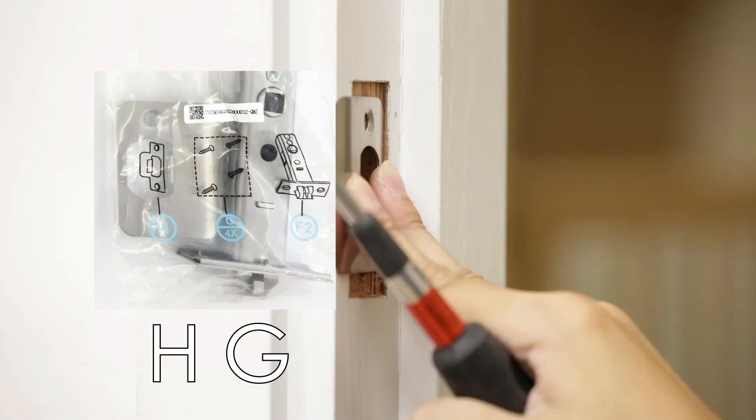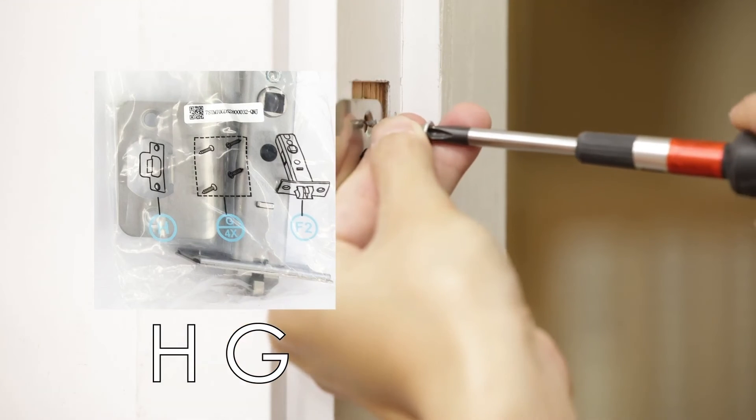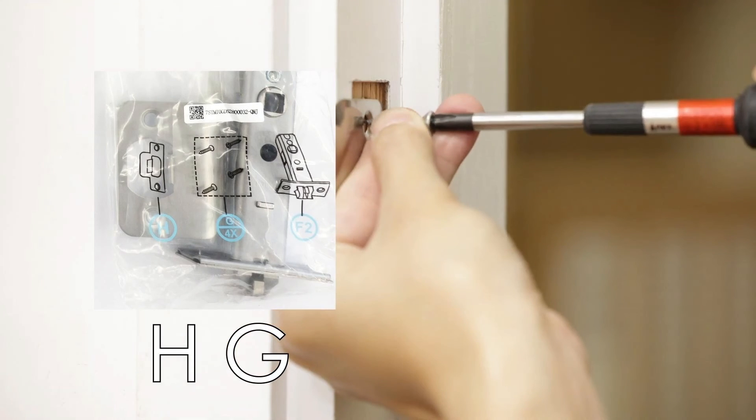Install latchbolt strike H. Ensure the latchbolt plunger is against the strike plate and secure with screws G. It is recommended that you use the included strike plate. However, if you find the deadbolt and latchbolt still work with your existing strike plates free of any binding or resistance, you can use it.